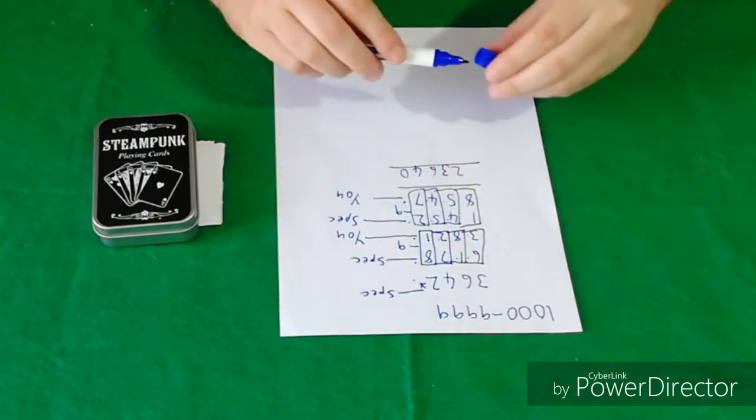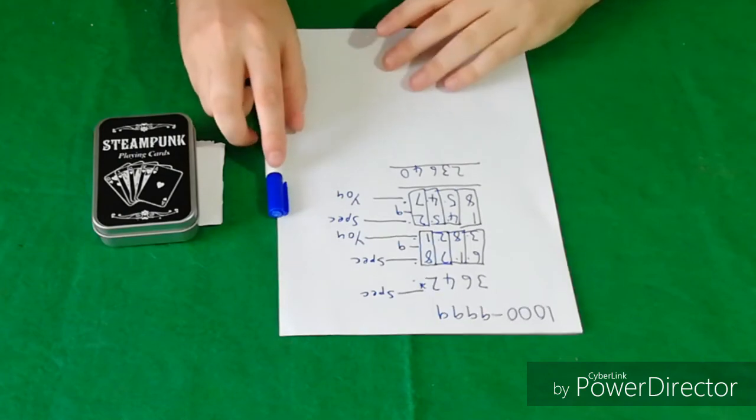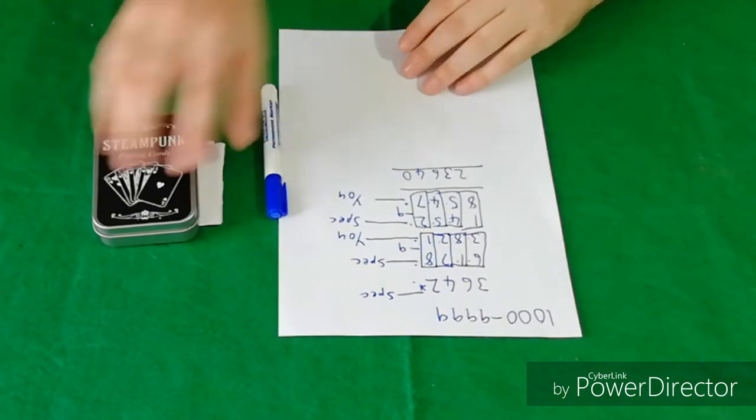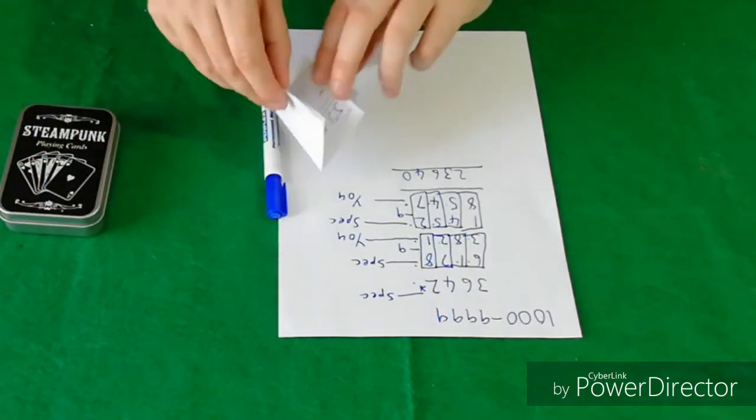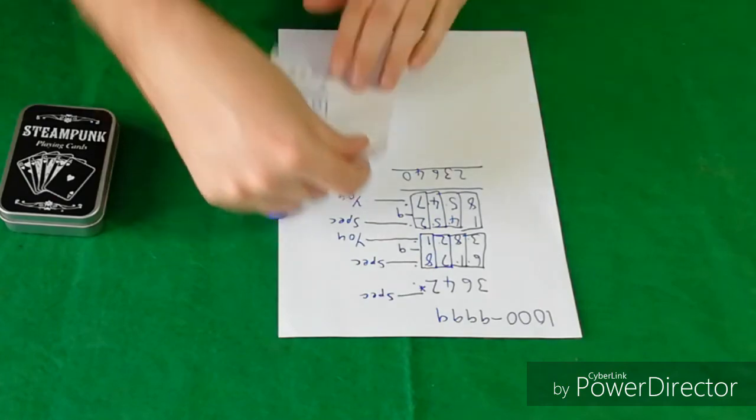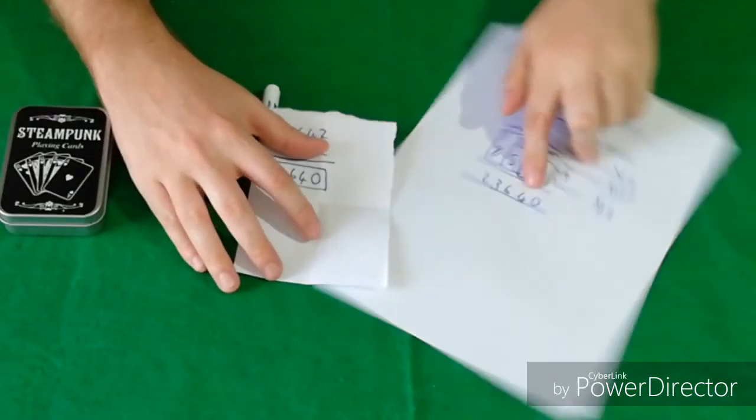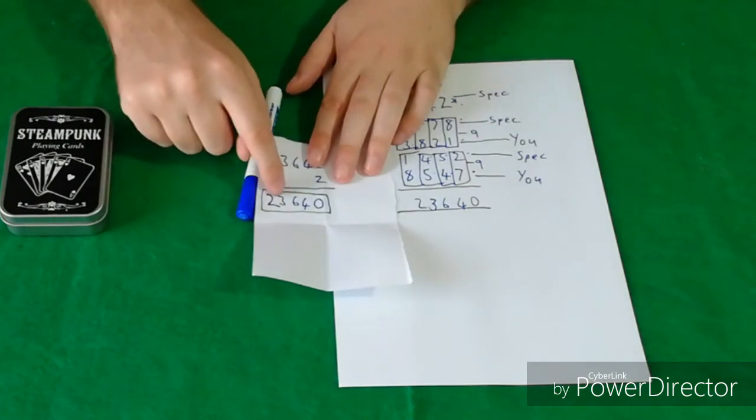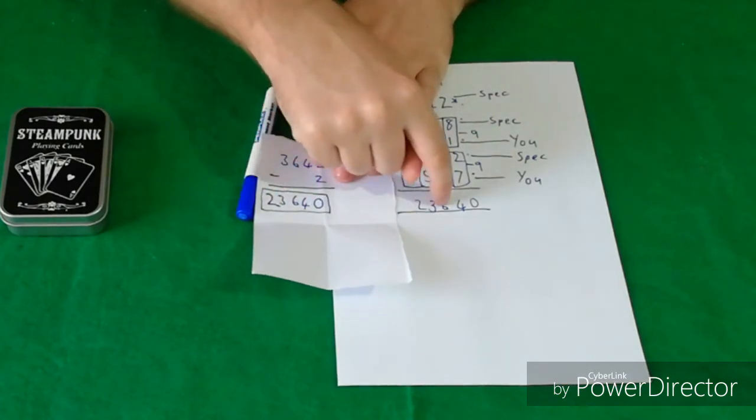Okay, and I'm back. You can of course use a calculator for this part to make it quicker, but anyway that's the number you get to and in fact once again my prediction is exactly the same as that number 23640. 23640.